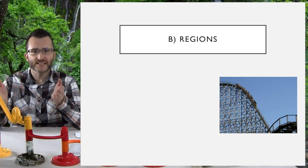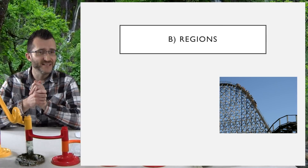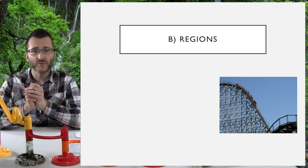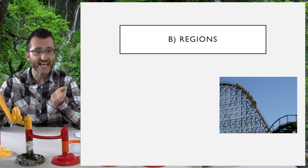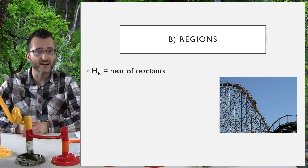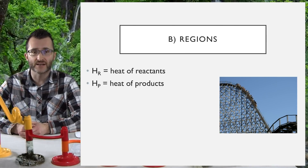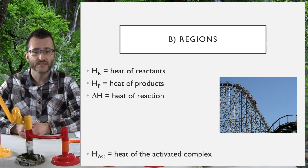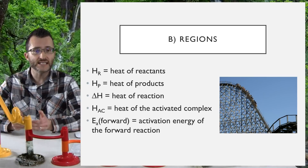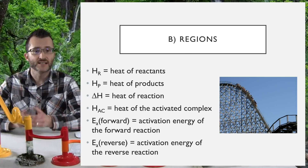Let's break down the different regions found on a potential energy diagram. Many of these begin with H, which stands for heat, but we could easily exchange H for PE because heat represents the potential energy. HR equals the heat of reactants. HP equals the heat of products. Delta H is the heat of reaction. HAC is the heat of the activated complex. EA(F) is the activation energy of the forward reaction, and EA(R) is the activation energy of the reverse reaction.